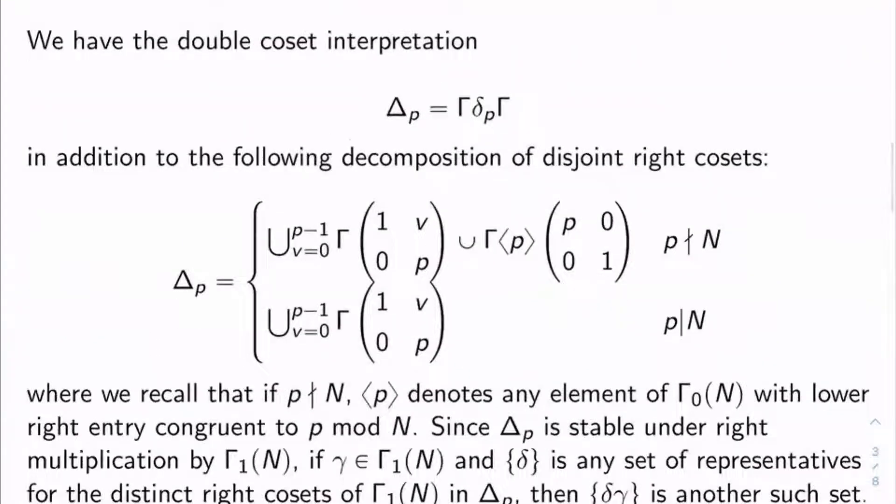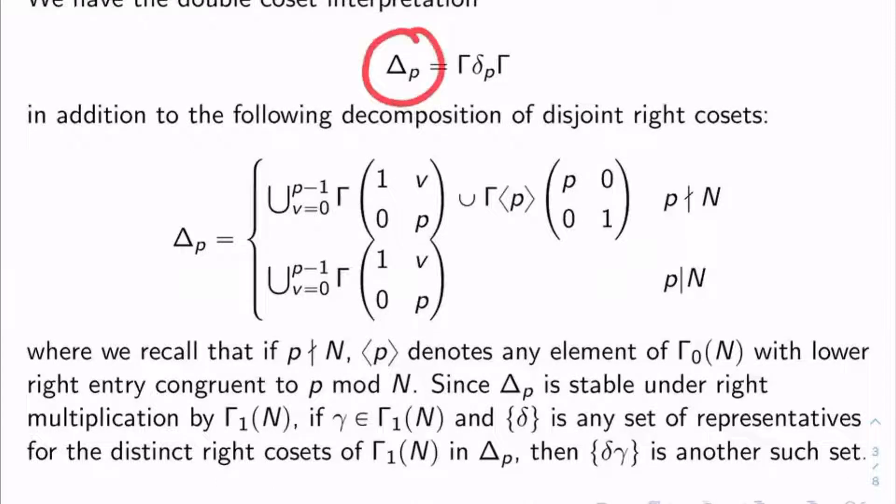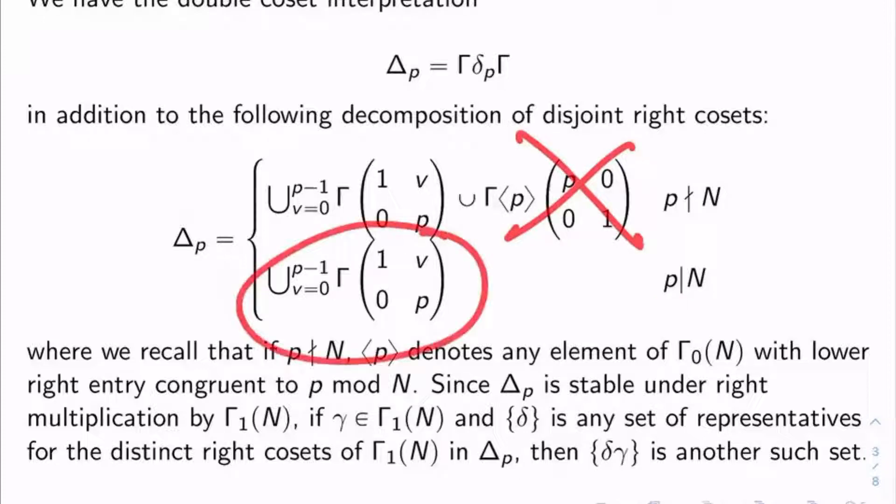It turns out you can think of delta sub p in two different ways. First of all, there's a double coset interpretation. Delta sub p turns out to be gamma delta p gamma. But also, you can decompose delta sub p into disjoint right cosets as follows. If p doesn't divide n, then delta sub p is the union from i equals 0 to p minus 1 of the right cosets gamma times (1 v; 0 p) union gamma diamond p times the matrix (p 0; 0 1). And if p does divide n, you get the exact same thing, but you don't get this last chunk on the end here.